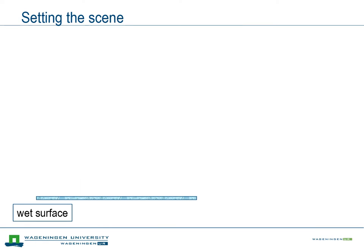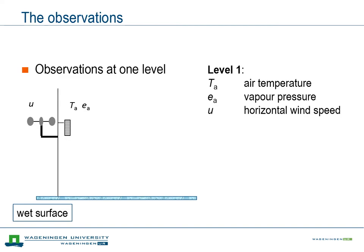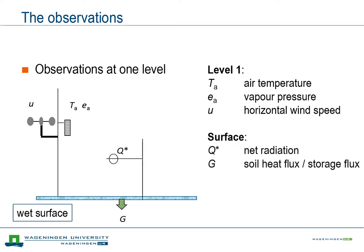So let's first define the situation that we are considering. We take a surface that is wet, so water can evaporate unrestricted. What are the observations that we have available? First we have single level observations of temperature, humidity in terms of vapor pressure and wind speed. These observations cover what we need in terms of turbulent transport. Furthermore, we have net radiation and soil heat flux as input related to the surface energy balance.